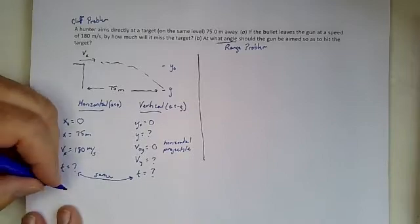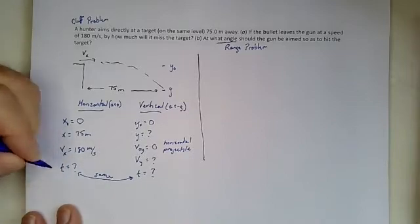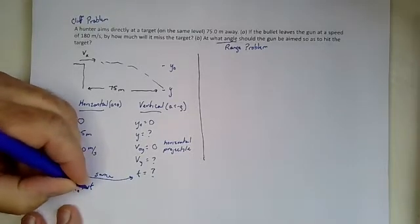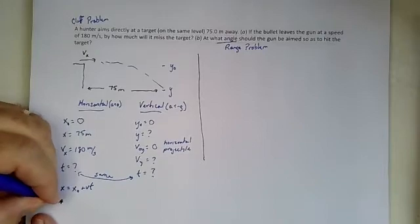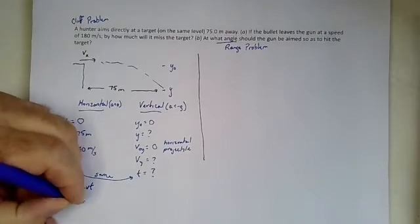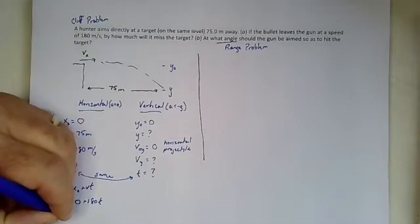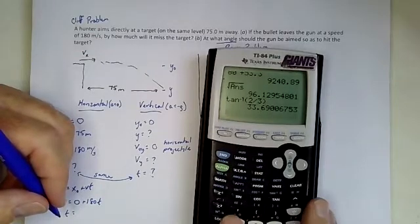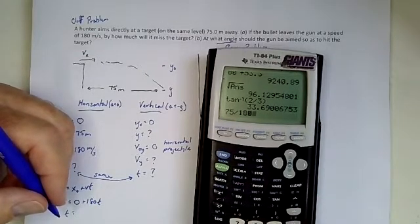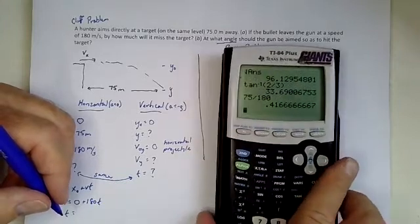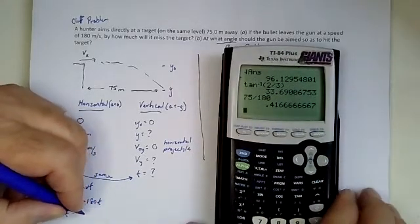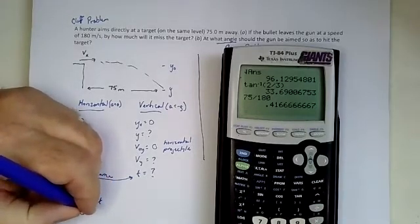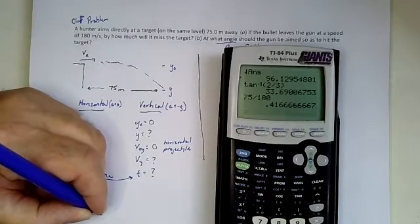Now let's take a quick look here. We want the horizontal motion. So that's going to be x equals x zero plus vt. And so we want 75 is equal to zero plus 180 times time. And so we can solve for time. So 75 divided by 180. And that's a pretty small time. But it is a bullet after all. So 0.417 seconds.